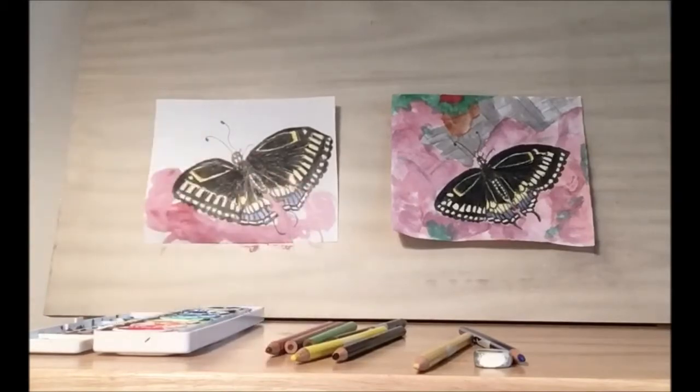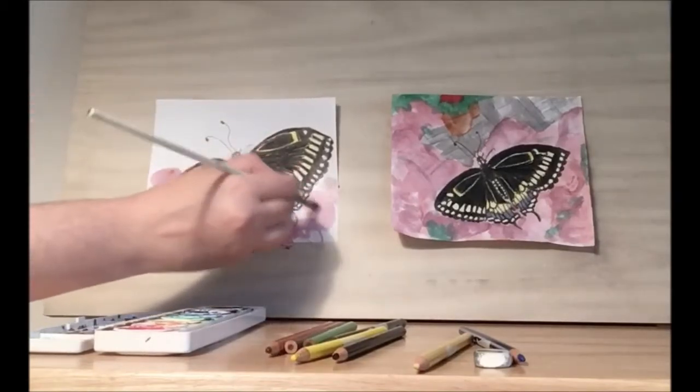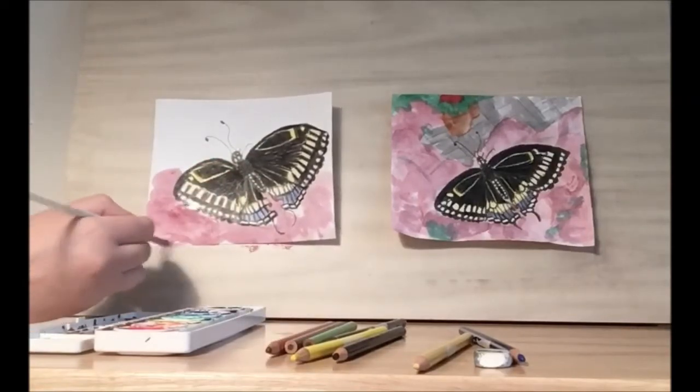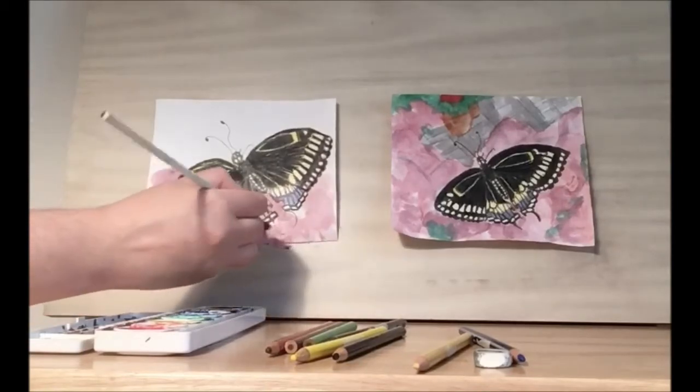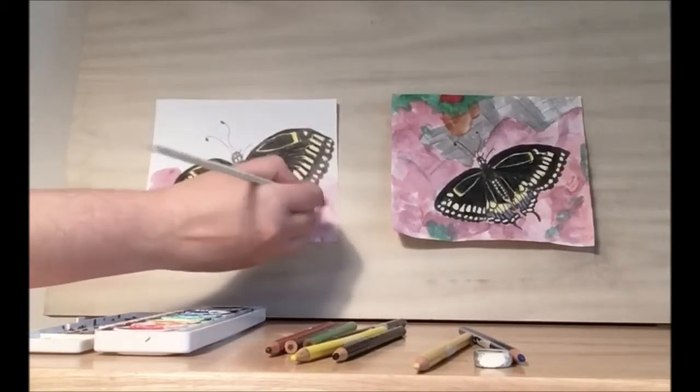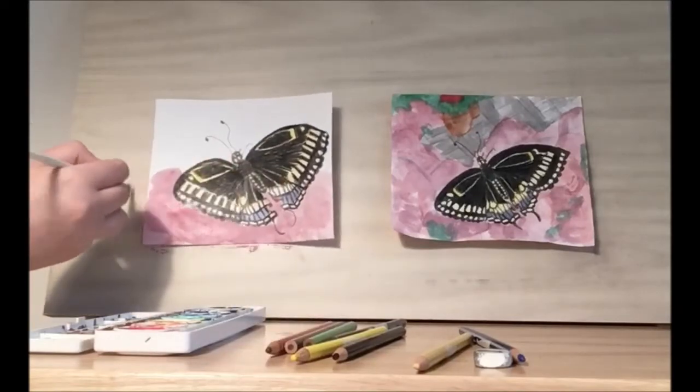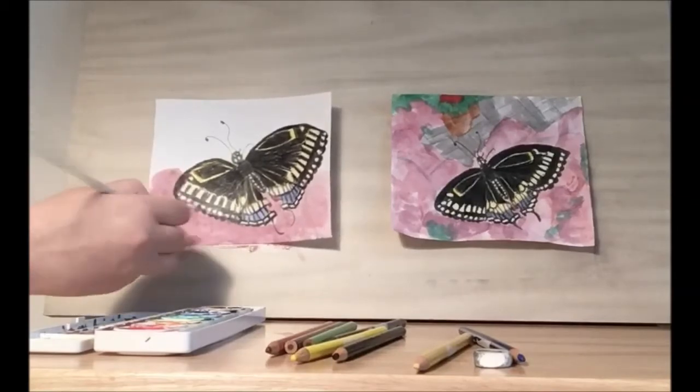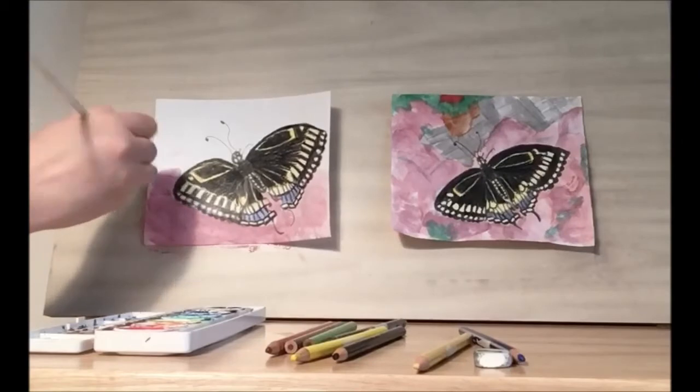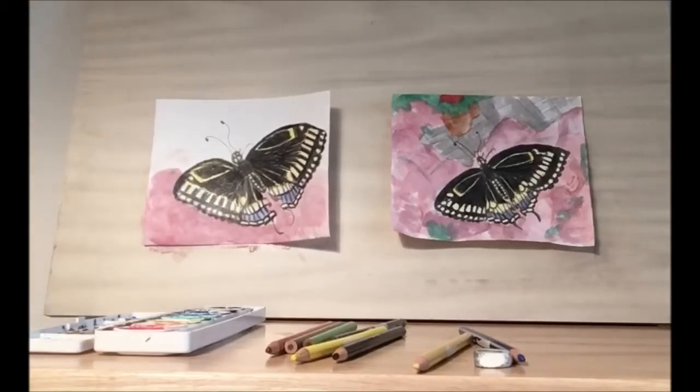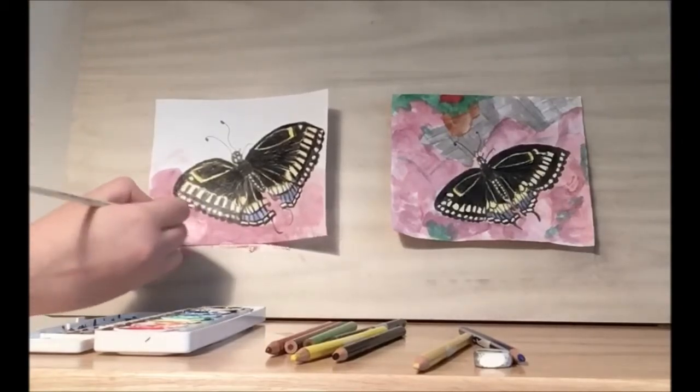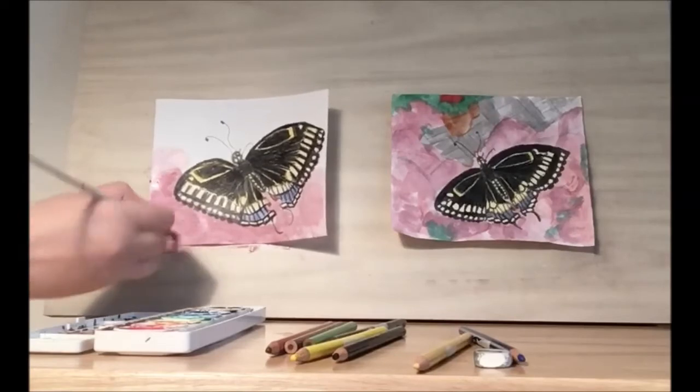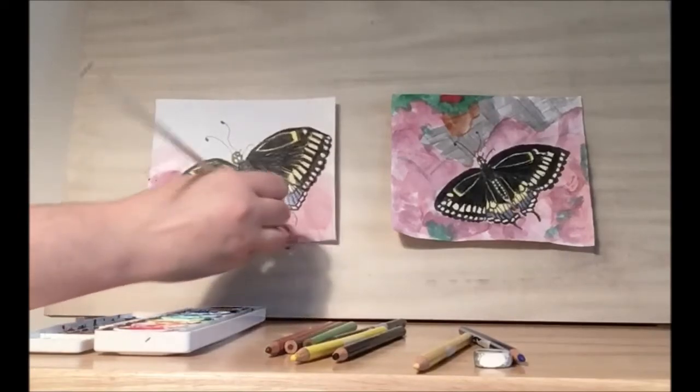So these flowers have nice big petals. So we want to create curlicues that look like petals. You can use water to take away some of the color and add it elsewhere because we want to get a lot of variation in our color.